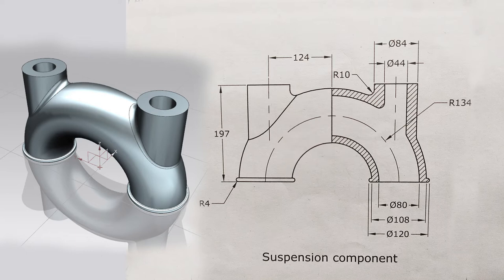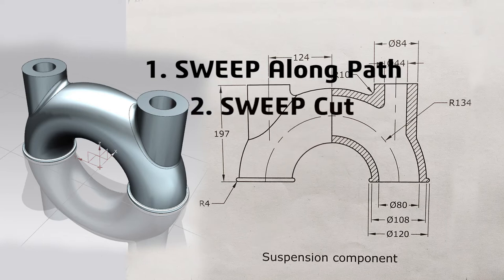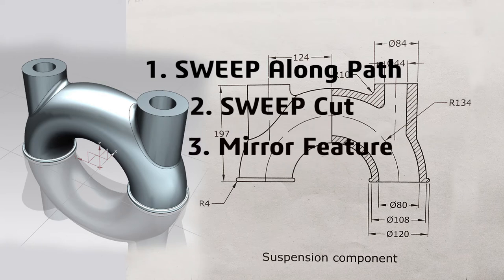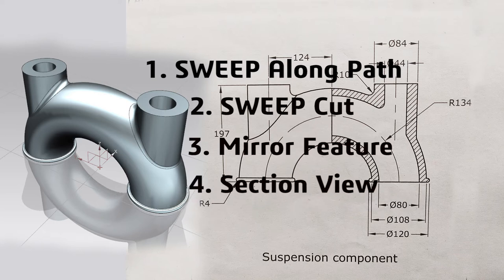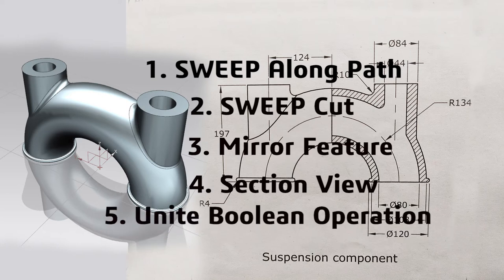I'm going to give you information about how to use the sweep feature to create a circular arc type of tube, and using the same sweep command you will be able to learn how to create a sweep cut feature to make a hollow inside tube kind of structure. Then you will be able to learn how to use a mirror command for solid features, and at the end you will learn how to see inside your component using a section view.